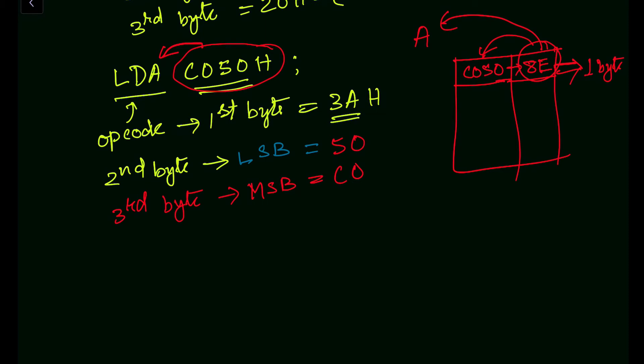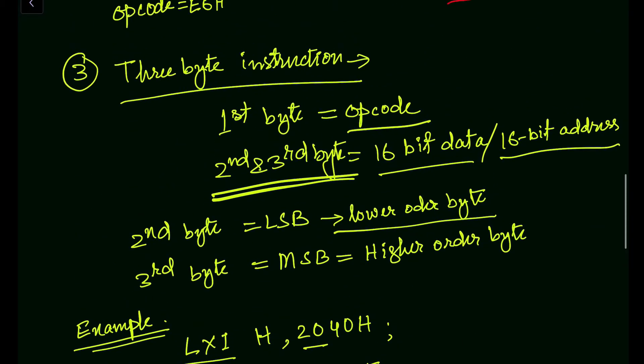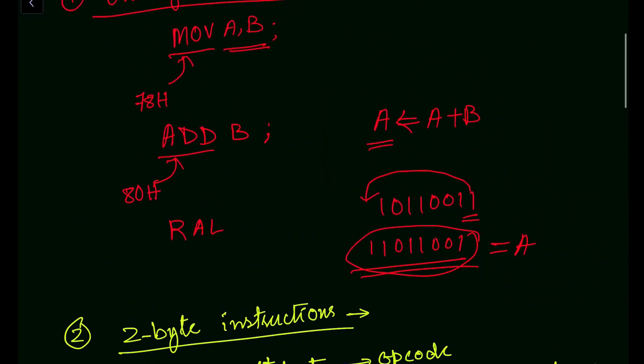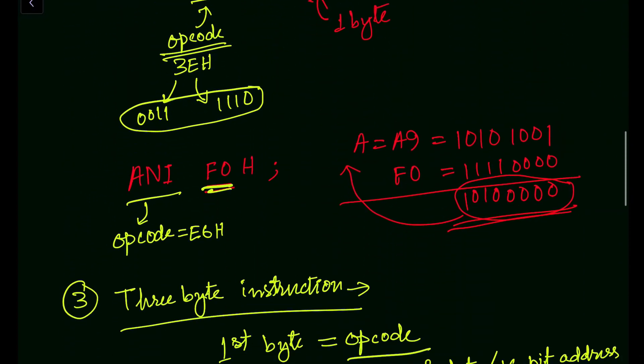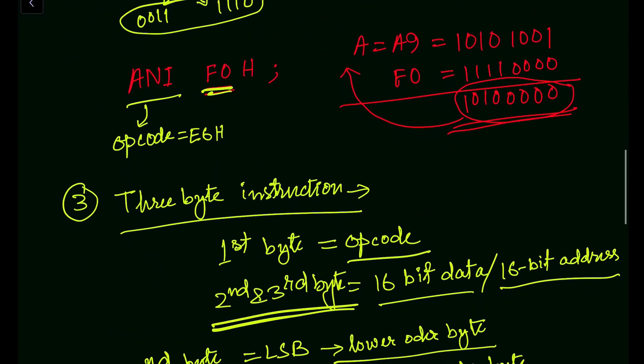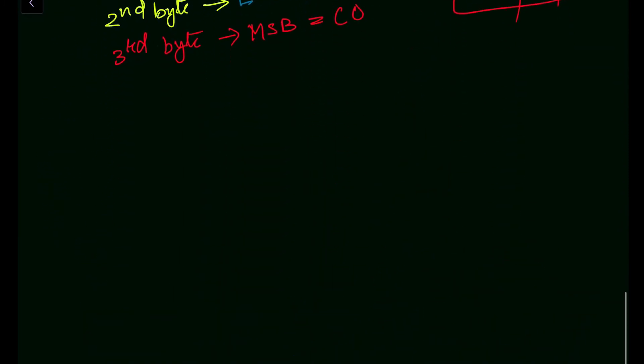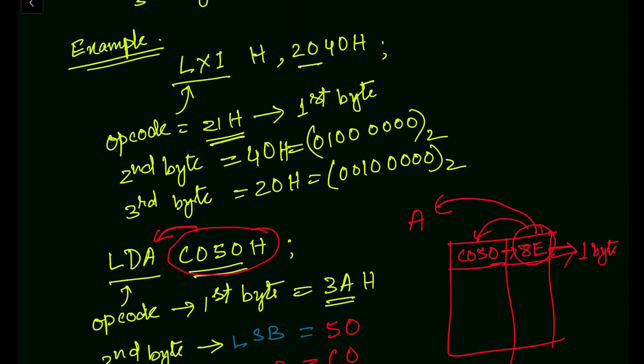In this video we have learned about various instruction word sizes of the 8085. We have seen three types of instructions: one-byte instructions, two-byte instructions, and three-byte instructions, each with examples. That is all for today — thank you for watching. If you have any questions, please put them in the comment section below. Also, please like, share, and subscribe to my channel.